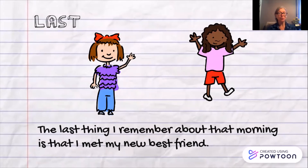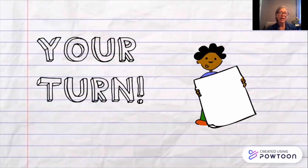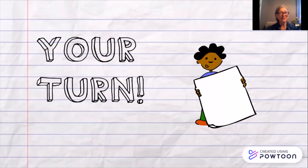Do you see how we move from first to then to next to last? And sometimes it takes more than one sentence to move us from one part of the story to the next. Now it's your turn. I would invite you to think of two or three, maybe even four ideas for personal narratives. Choose one of those ideas and write a few paragraphs — first, next, then, finally or last. Four parts, four paragraphs for your personal narrative. I would love for you to share them with someone in your class, with your teacher, or someone in your home. Thanks so much. Until next time, Arts Can Teach at Home.